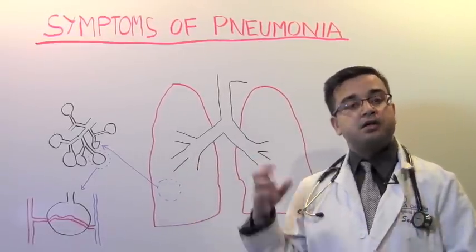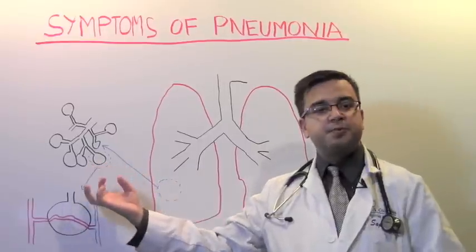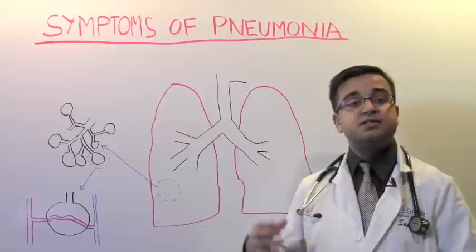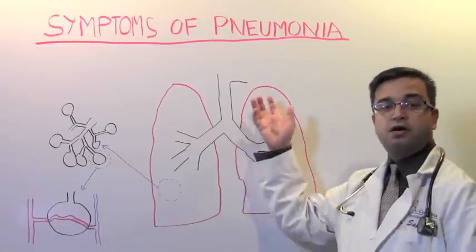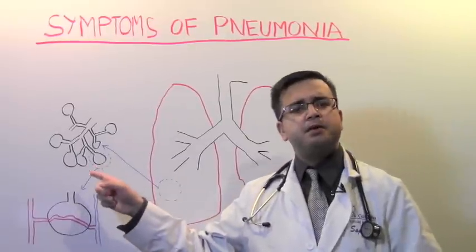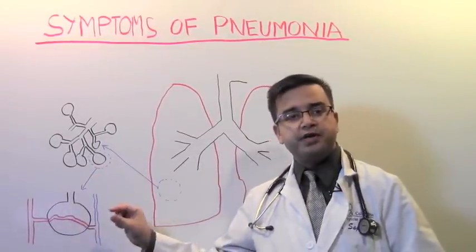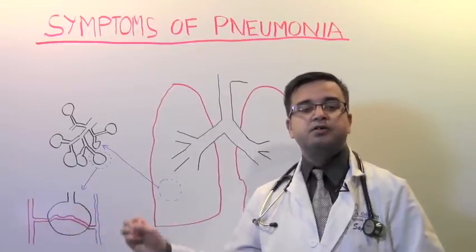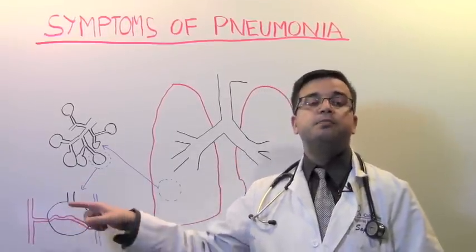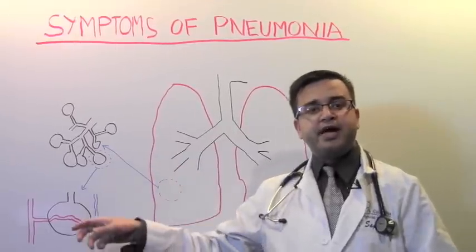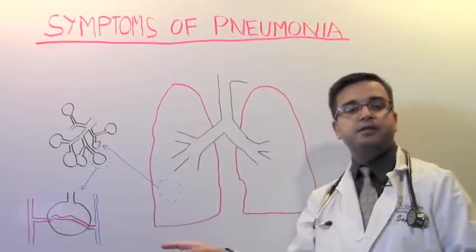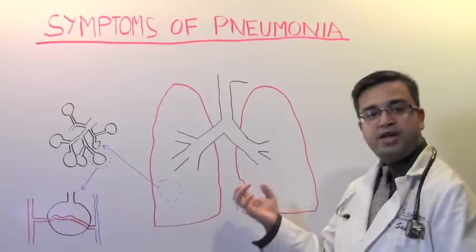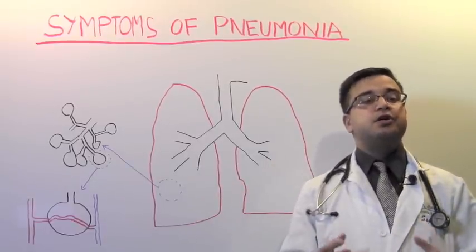When we take air in, all these bubbles expand. When we breathe the air out, these bubbles partially collapse. This is how air moves in and out of our lungs as we breathe. In these bubbles, there are blood vessels with very thin walls. They capture the oxygen and give out carbon dioxide into these air bubbles. Then the blood carries oxygen all over our body. Now you understand what lungs are and how we breathe with them, so it will be easier to learn about pneumonia.